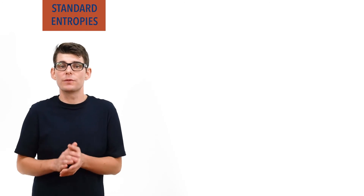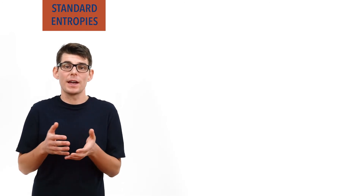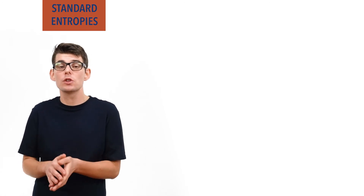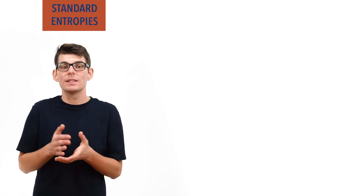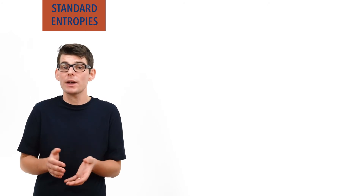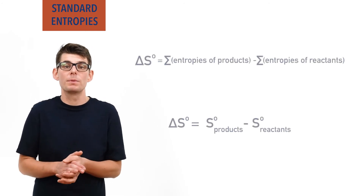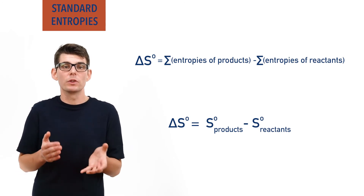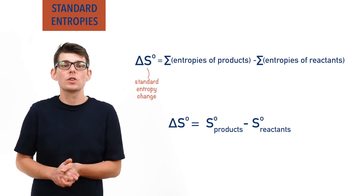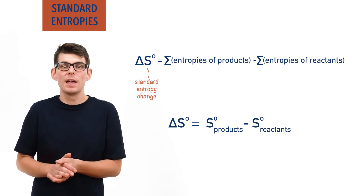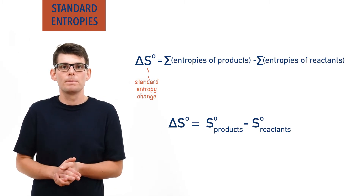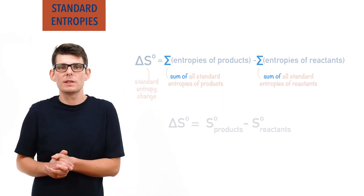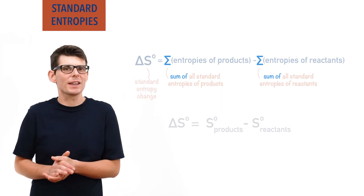If the standard entropies for all reactants and products in a reaction are known, it is straightforward to find the standard entropy change that would occur for the reaction. The standard entropy change for a reaction equals the sum of entropies of products minus the sum of entropies of reactants. It is shown as delta S with the standard symbol. Sum of just means all values added together, shown in formulas with the sigma symbol.